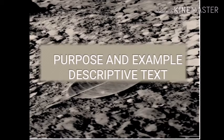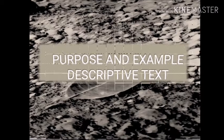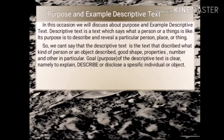Purpose and Example of Descriptive Text. In this occasion we will discuss about Purpose and Example Descriptive Text. Descriptive Text is a text which says what a person or a thing is like. Its purpose is to describe and reveal a particular person, place, or thing. The goal of descriptive text is to explain, describe, or disclose a specific individual or object.